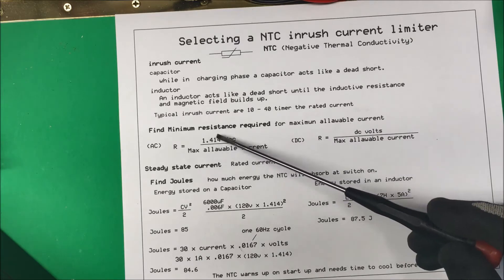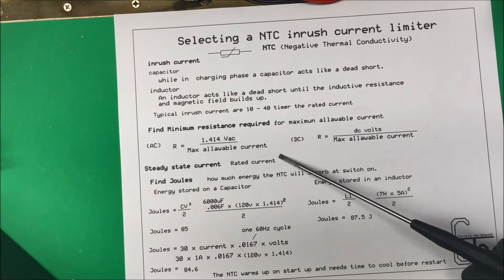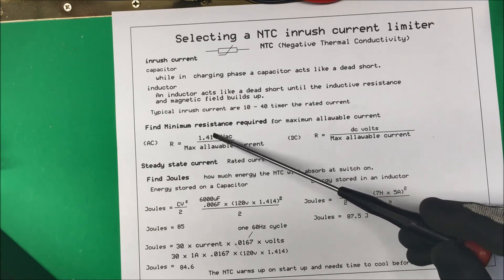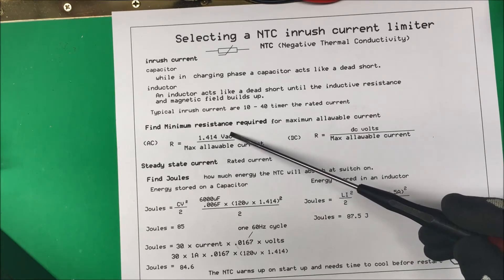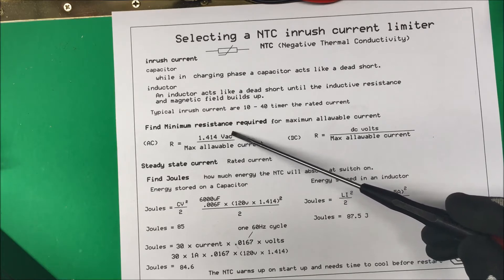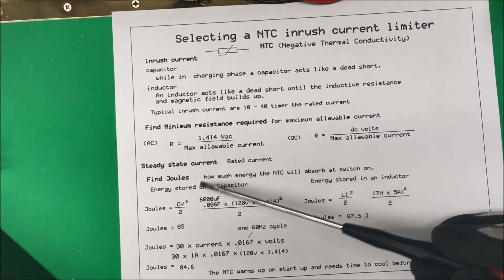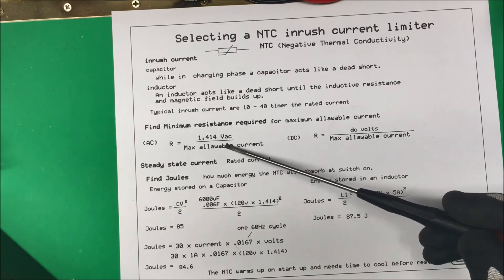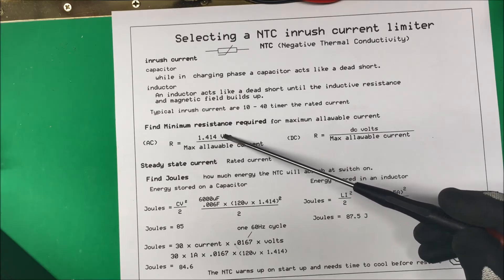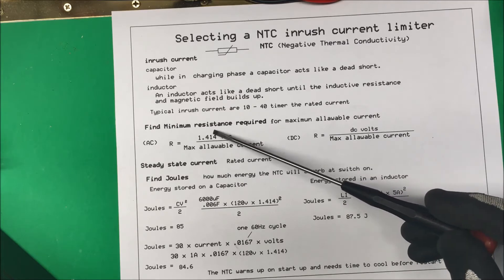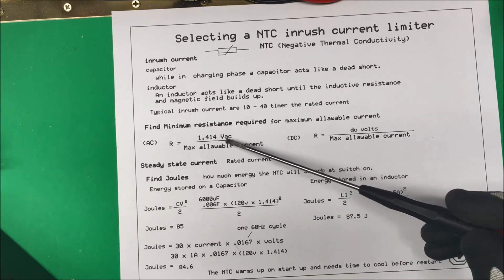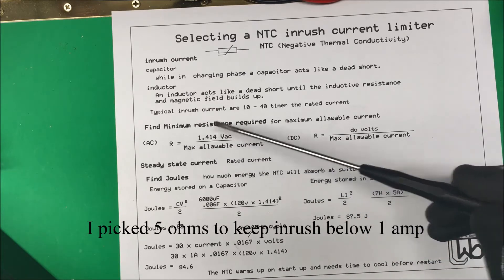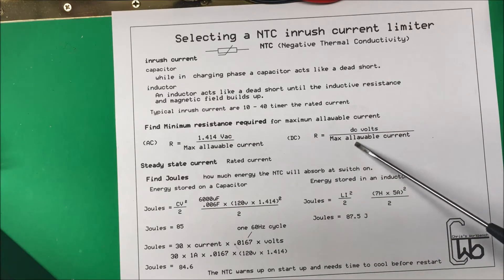We want to find the minimal resistance required for the maximum allowable current. The resistance equals 1.414 times the AC RMS voltage — giving us the peak voltage — divided by the maximum allowable current. In my case I want 7 amps as my maximum allowable current, and the voltage is 25V RMS, so doing the math it comes out to about 5 ohms. For a DC circuit you just divide the DC voltage by the maximum allowable current.